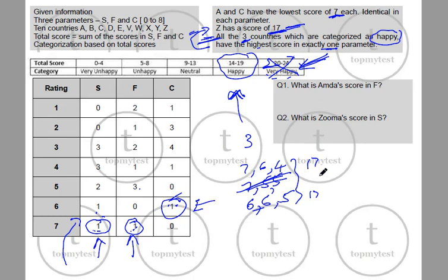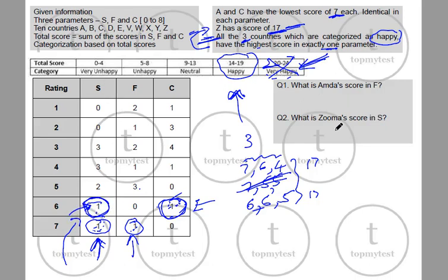To find Z's score in S: the two sevens must belong to two different countries. If Z scores 7 in any parameter, it cannot also take this particular 6 — so Z must take this 6 from S. Therefore, Z's score in S is 6. That part is resolved.